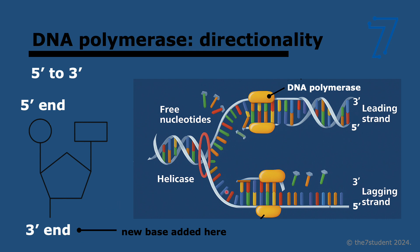The two strands formed when helicase separates the DNA are anti-parallel, meaning replication moves in opposite directions. On the leading strand, DNA polymerase moves towards the replication fork, so replication is continuous. When helicase opens the strands, the leading strand polymerase moves with it — it's continuous, it's the leading strand.